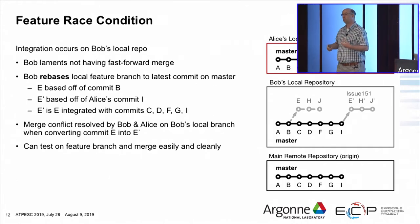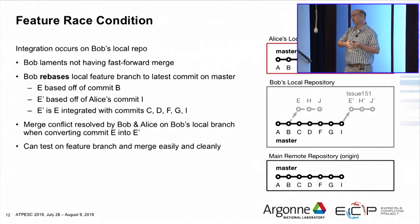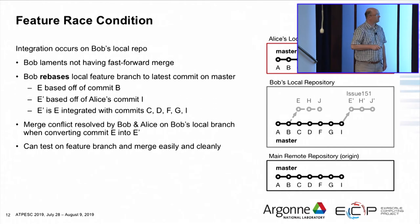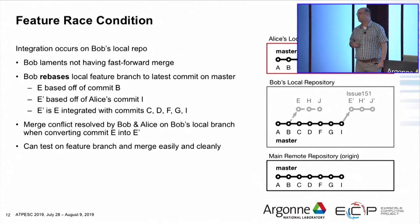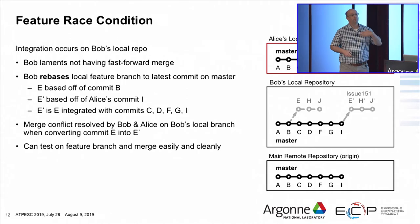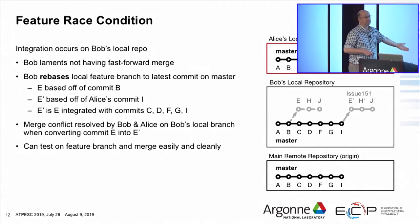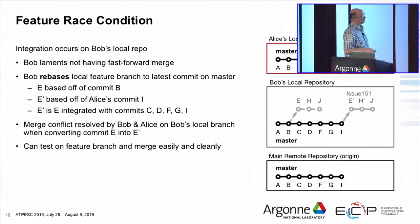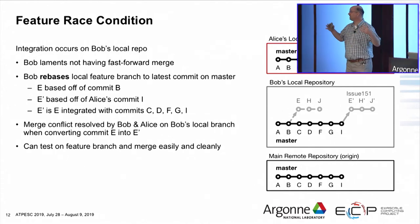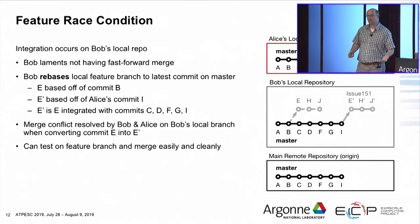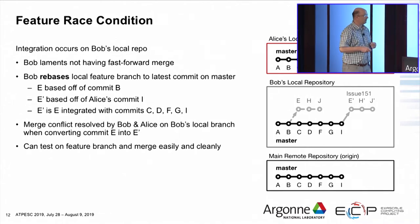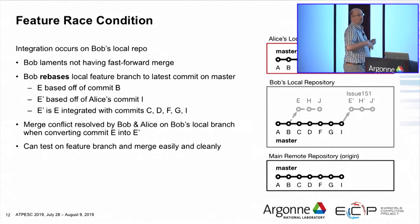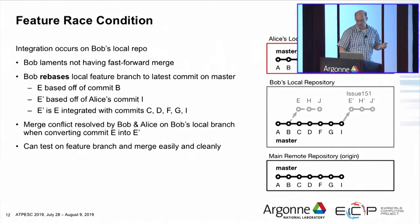When Git discovers a conflict during the rebase, it brings it to Bob's attention and he has to work with Alice to resolve it. Once the rebase is finished, he can check out his new commit J prime and do whatever testing he needs to confirm his feature branch wasn't broken during rebasing and that he hasn't broken Alice's work either. That's great, and it's all happening within his local repository. Once he's verified everything is fine, he does the fast-forward merge and pushes to the remote repository.